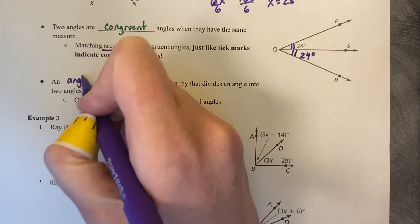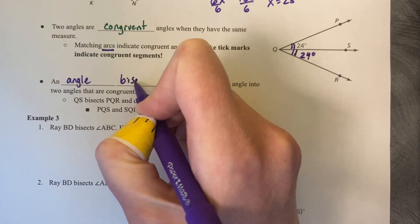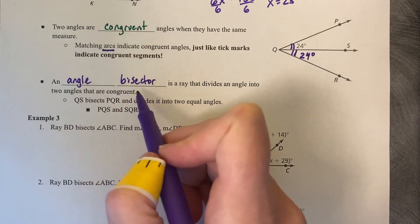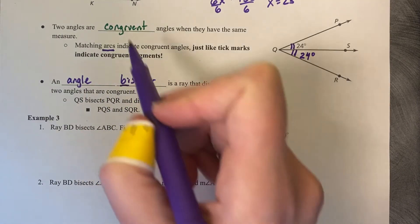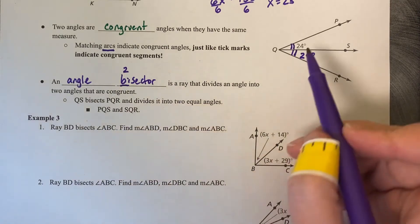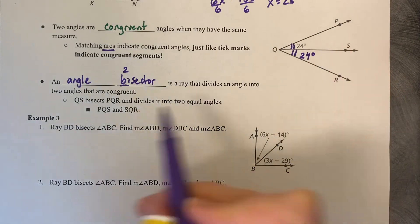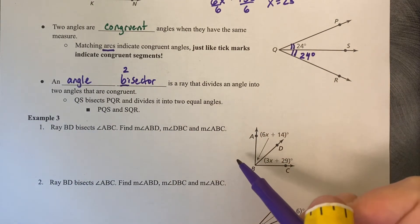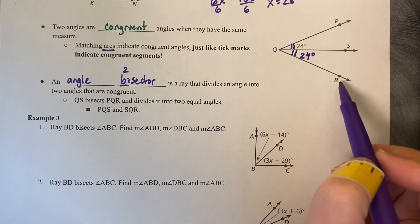An angle bisector is a ray that divides an angle into two angles that are congruent. So just like segment bisector, bisector stands for two segments. Bi stands for two. So it's cutting it into two equal segments. So in an example, QS bisects PQR and divides it into two equal angles, PQS and SQR.